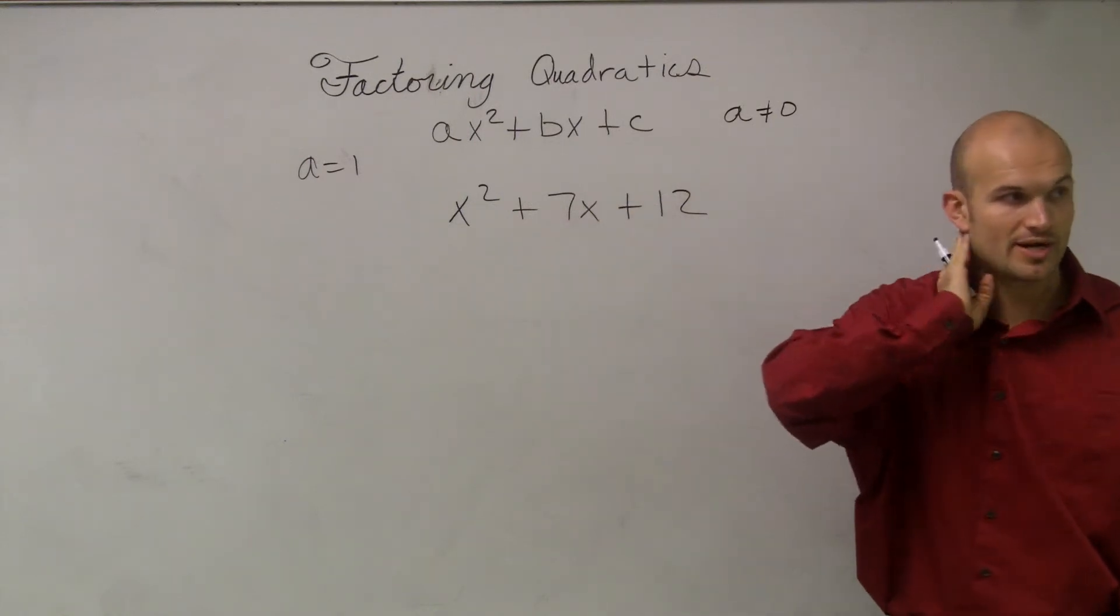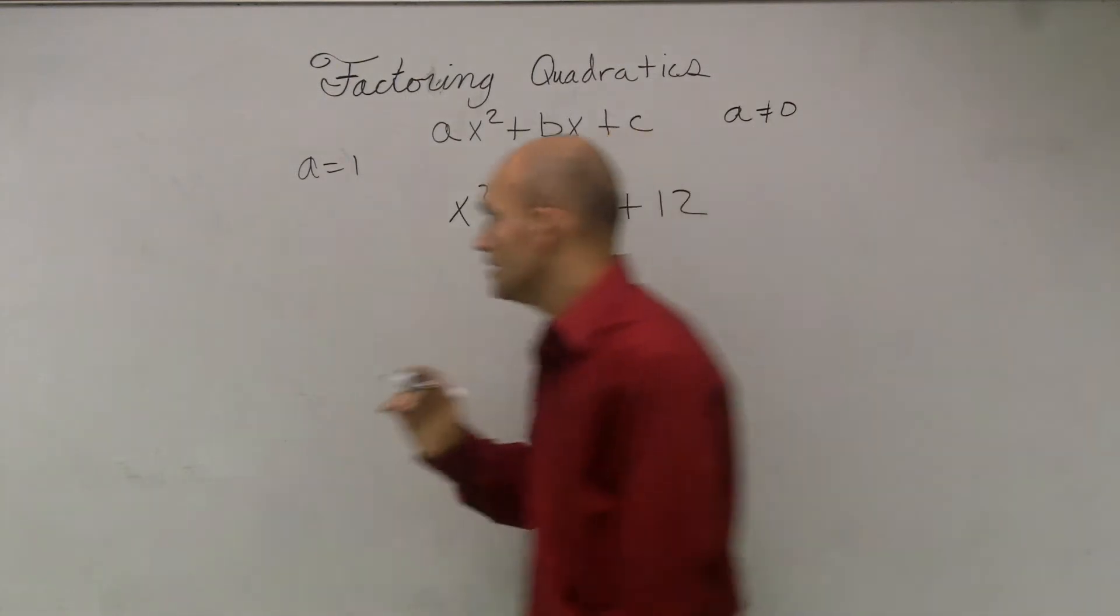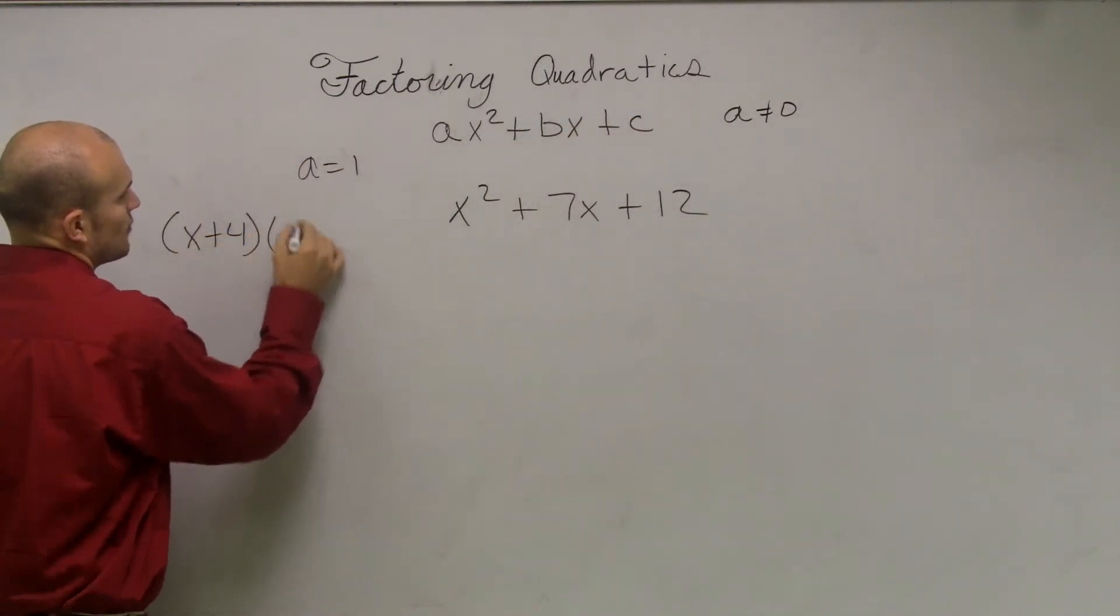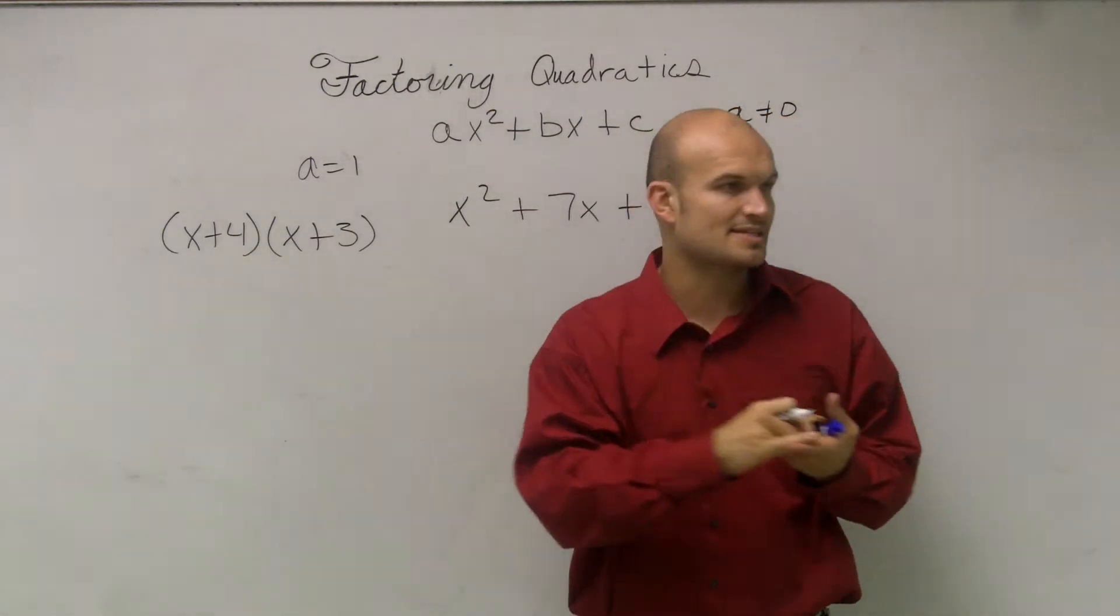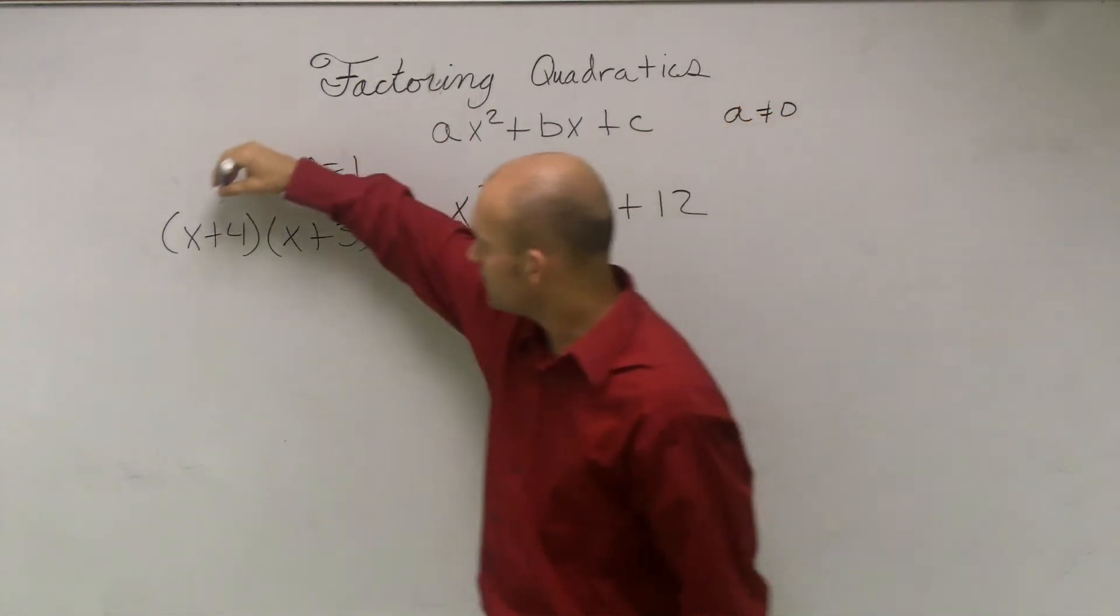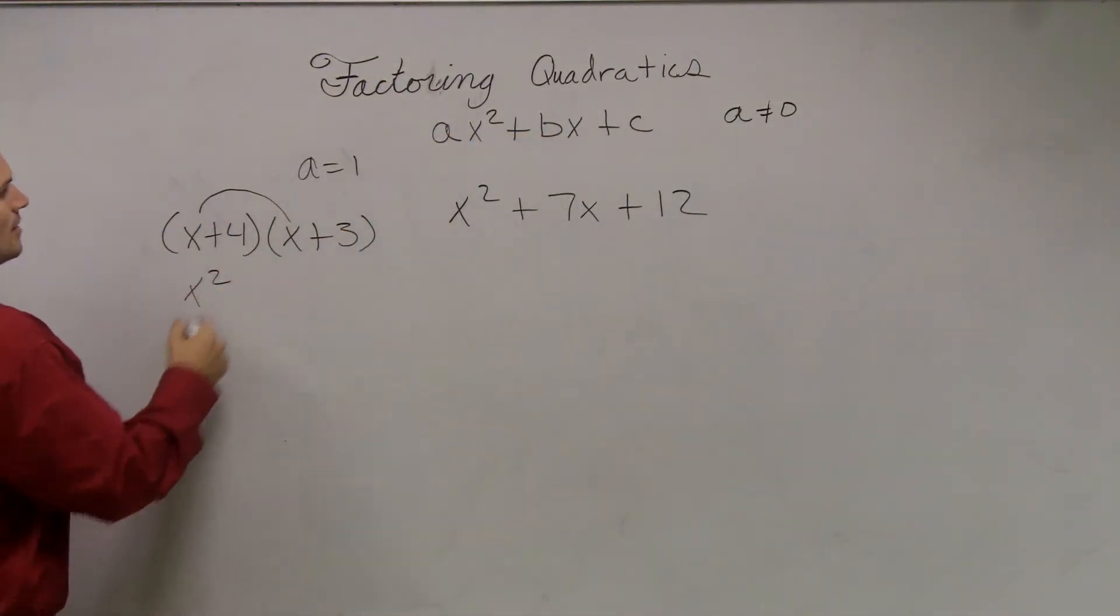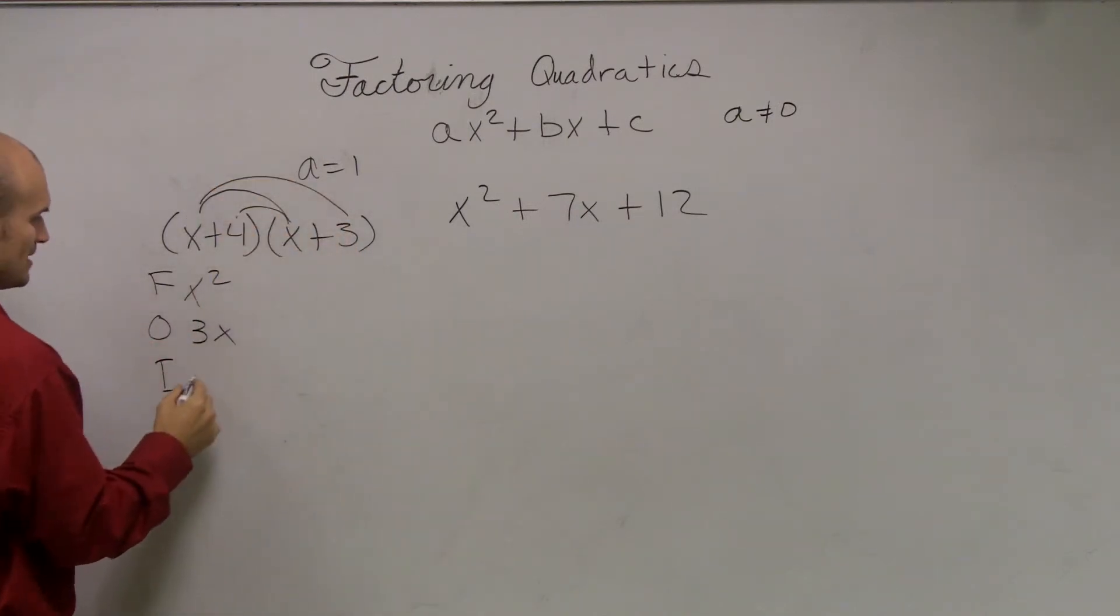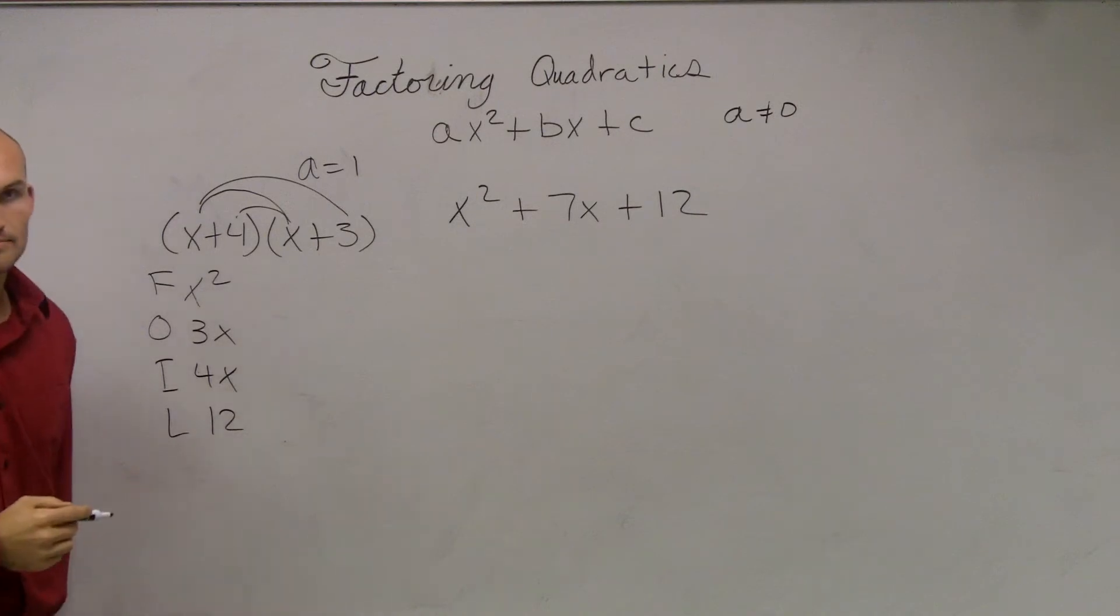Now, to understand how to factor quadratics, we first need to understand how can we get them. So one thing we worked on before was multiplying binomials. And if I said (x+4)(x+3), I showed you guys a lot of different ways to multiply this, right? By using distributive property, by using FOIL. One of the important things was you multiply your first terms, right? Gave you x squared. Multiply the outer terms. Outer terms would have been 3x. Inner terms would have been 4x. And then the last terms would have been 12, right?